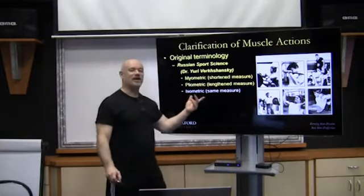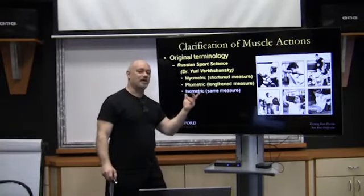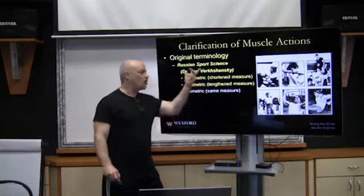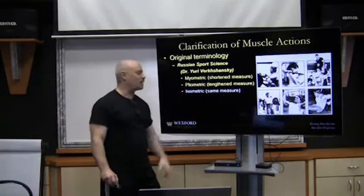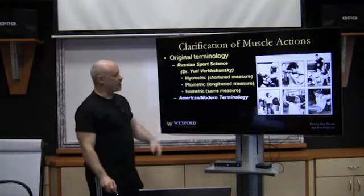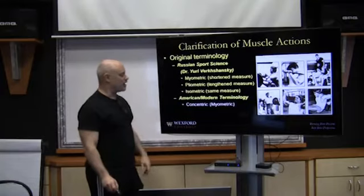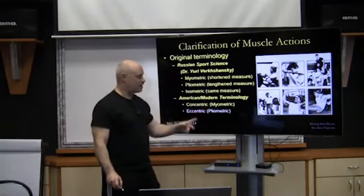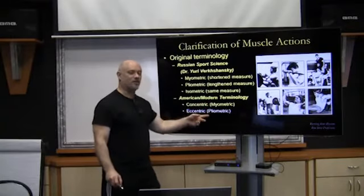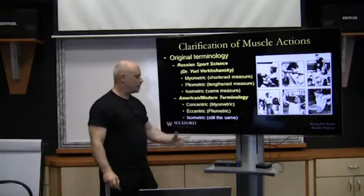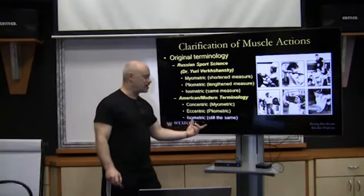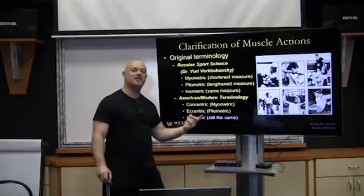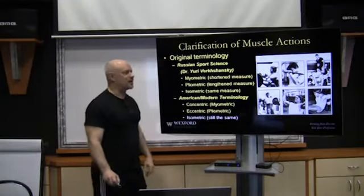We also have isometric — same measure — and this is the only term we kept according to the original terminology. The American modern terminology would be concentric, which is myometric or shortening; eccentric, which is plyometric or lengthening measure; and we still kept isometric as the same measure. We still use that term today.